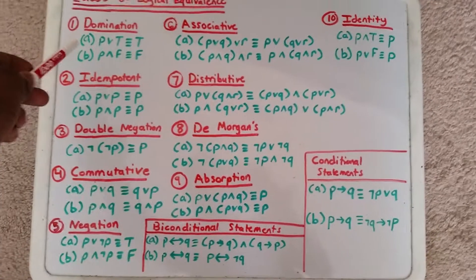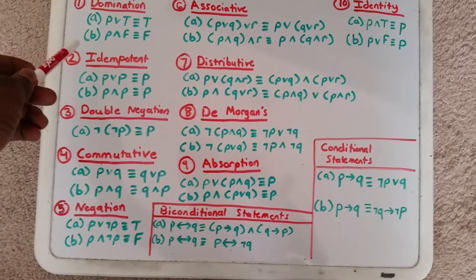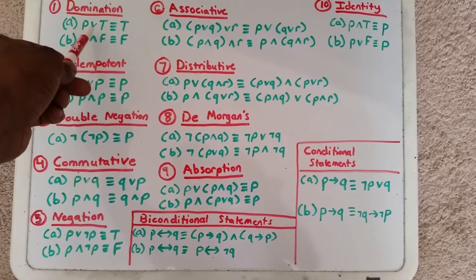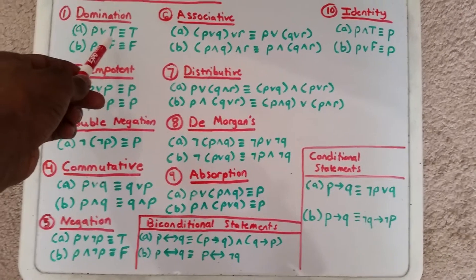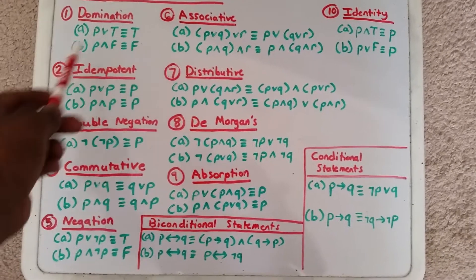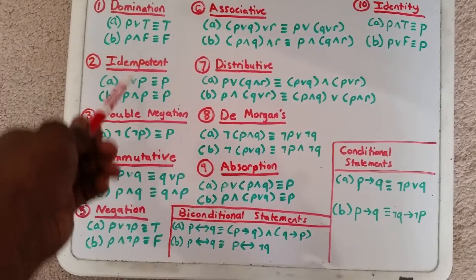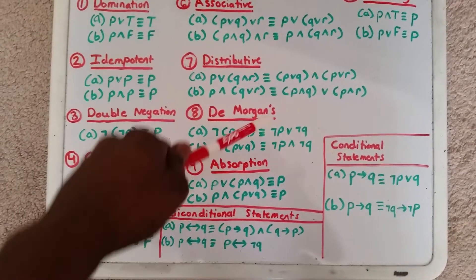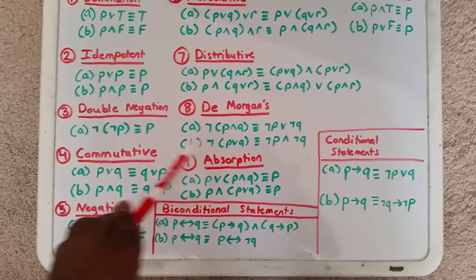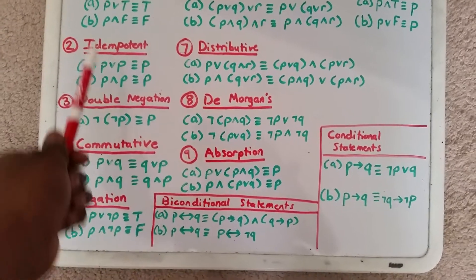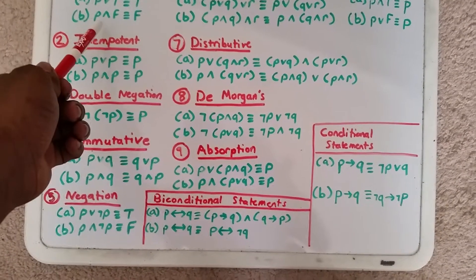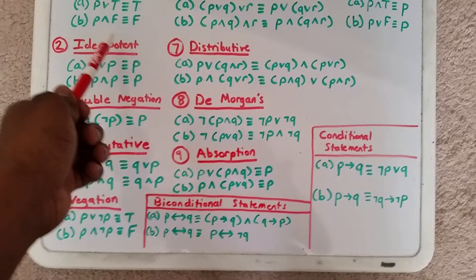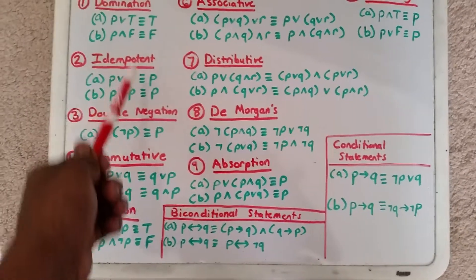The first law is the domination law. It says if you have P or true, then the overall statement is true, where P is a proposition — all variables P, Q, and R are propositions. The second one is P and false, and anytime you have that, the statement is false.